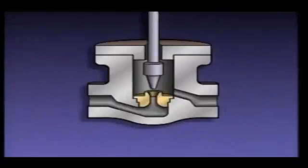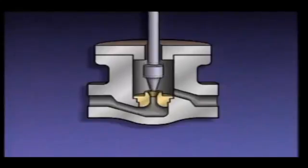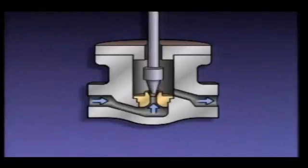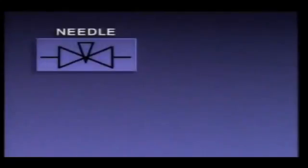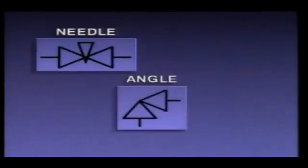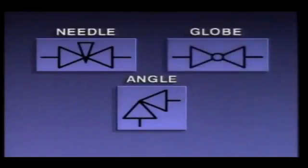A needle valve has basically the same parts as other globe valves, but its disc is shaped like a needle. The needle extends deep into the seating area of the valve. A small movement of the stem causes a small gradual change in the flow rate through the valve, giving the needle valve an extremely fine throttling ability. On a piping system diagram, a needle valve generally looks like this, an angle valve generally looks like this, and a globe valve generally looks like this.